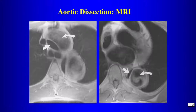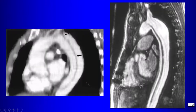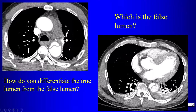MRI can also be used to image dissections, but it is very difficult to interpret due to slow flow and swirling flow producing signal abnormalities, especially within the false lumen. On black blood imaging, MRI can be very hard to interpret. MR angiography is much better — the dissection flap is demonstrated nicely, and here is the CT correlate for that particular case.